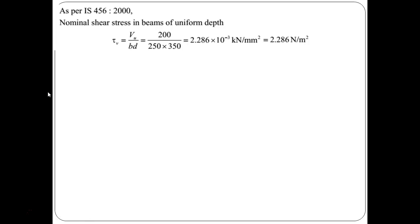So, again we can say from this particular equation, we can simply calculate this tau V that is VU divided by BD. VU is already given, B is already given and D is also given. So, we will get this particular stress, nominal shear stress in beam of uniform depth that is in terms of Newton per mm square, 2.286 Newton per mm square.